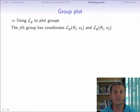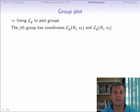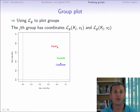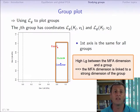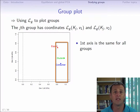This suggests that we can use this measure to construct a graph of the groups. A given group will have on the x-axis the coefficient Lg between this group and the first component, and on the y-axis the coefficient Lg with the second component. In our example, we can see that all the juries have an x-axis value close to 1 and therefore a high Lg with the first dimension of the MFA. A high Lg means that the MFA dimension is linked to a strong dimension of the group. Thus, the first dimension of the MFA is common to all groups.